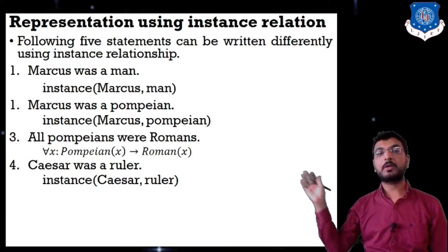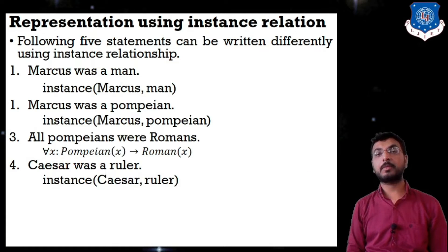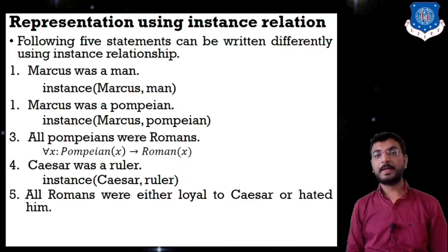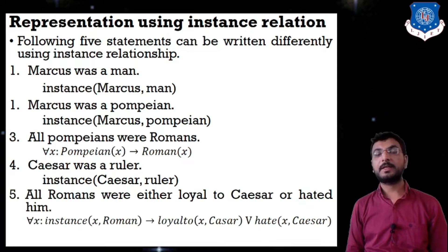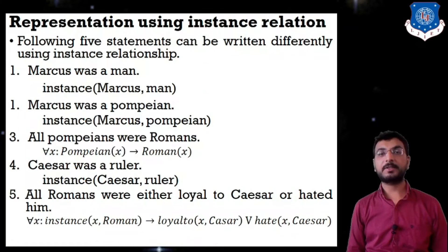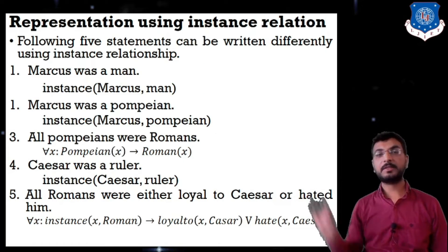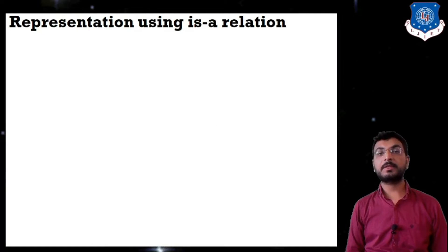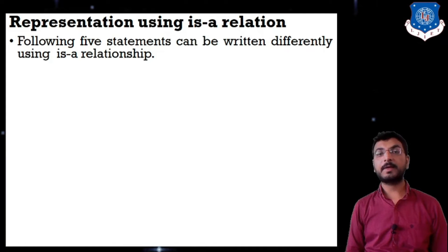Fourth: 'Caesar was a ruler' is represented as instance_of(caesar, ruler) — Caesar is an instance of the class ruler. Fifth: 'All Romans were either loyal to Caesar or hated him' is represented as: for all x, if x is an instance of Roman, then x is loyal to Caesar or x hated Caesar. Instance relationship converts unary relationships to binary relationships.